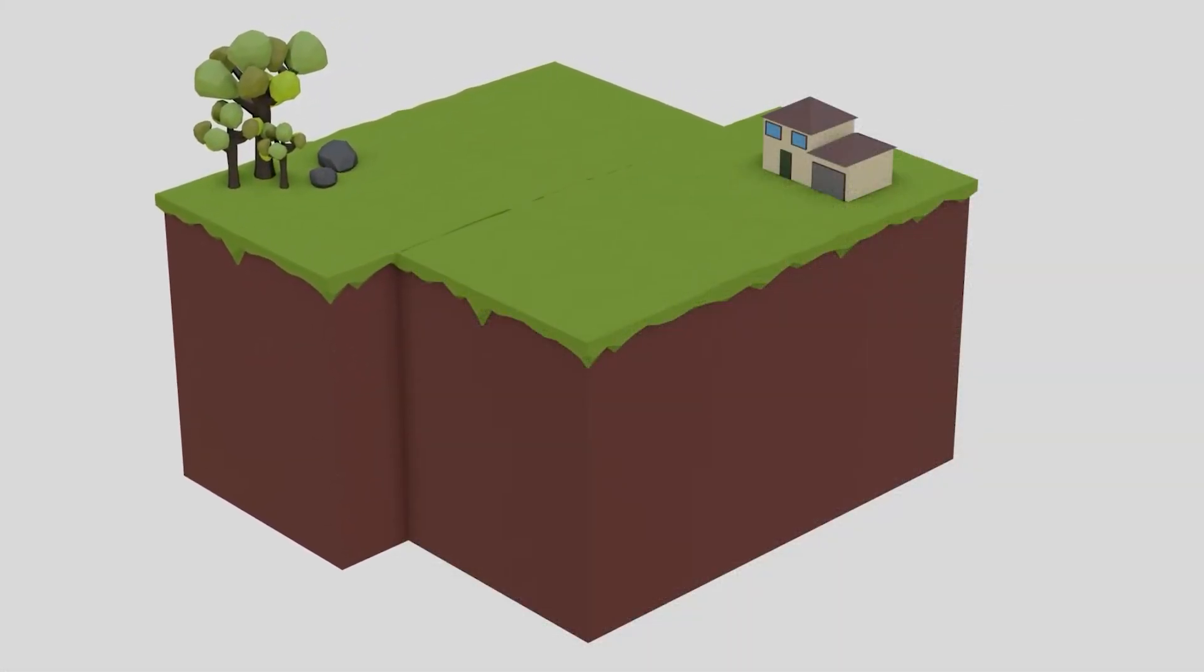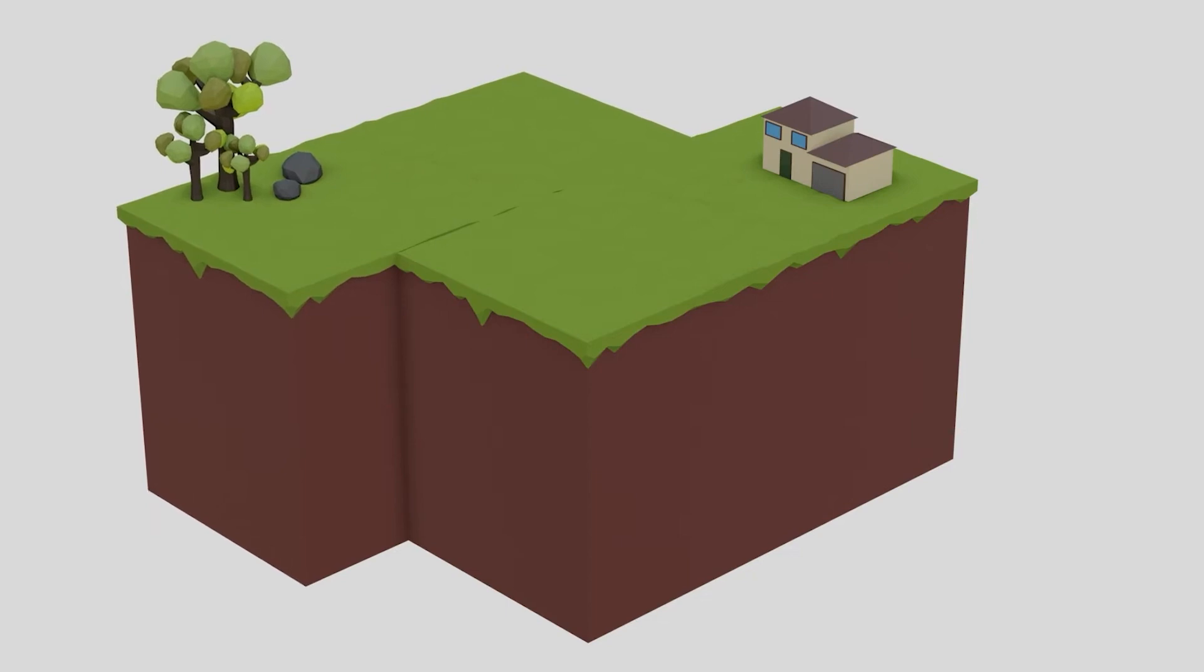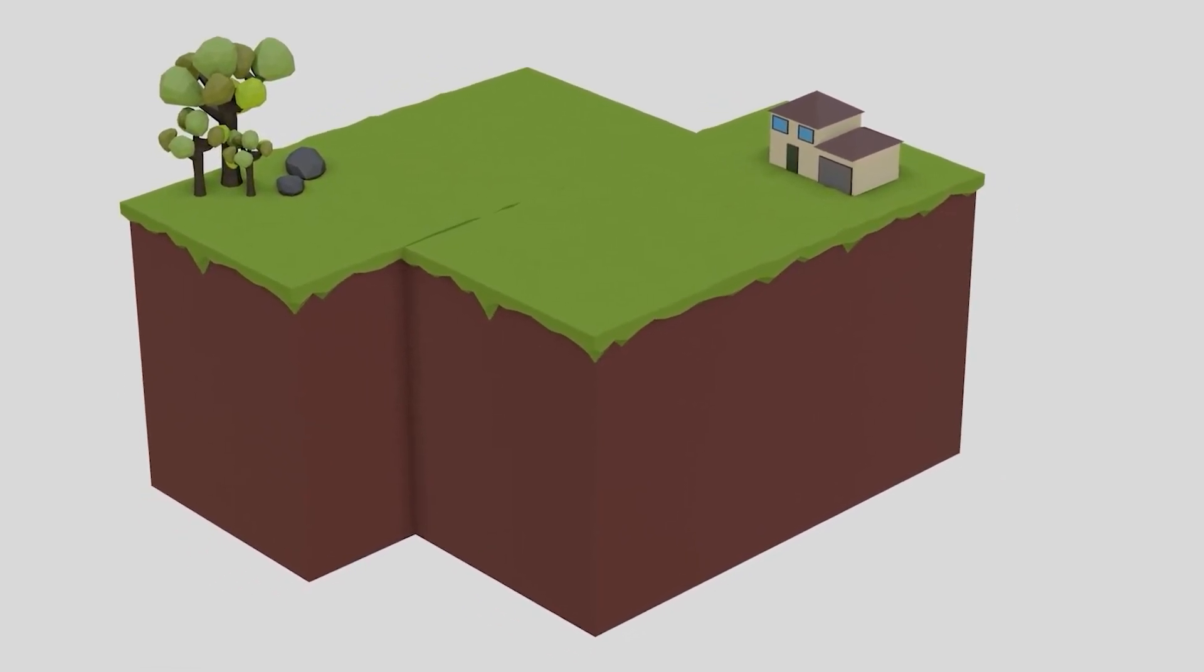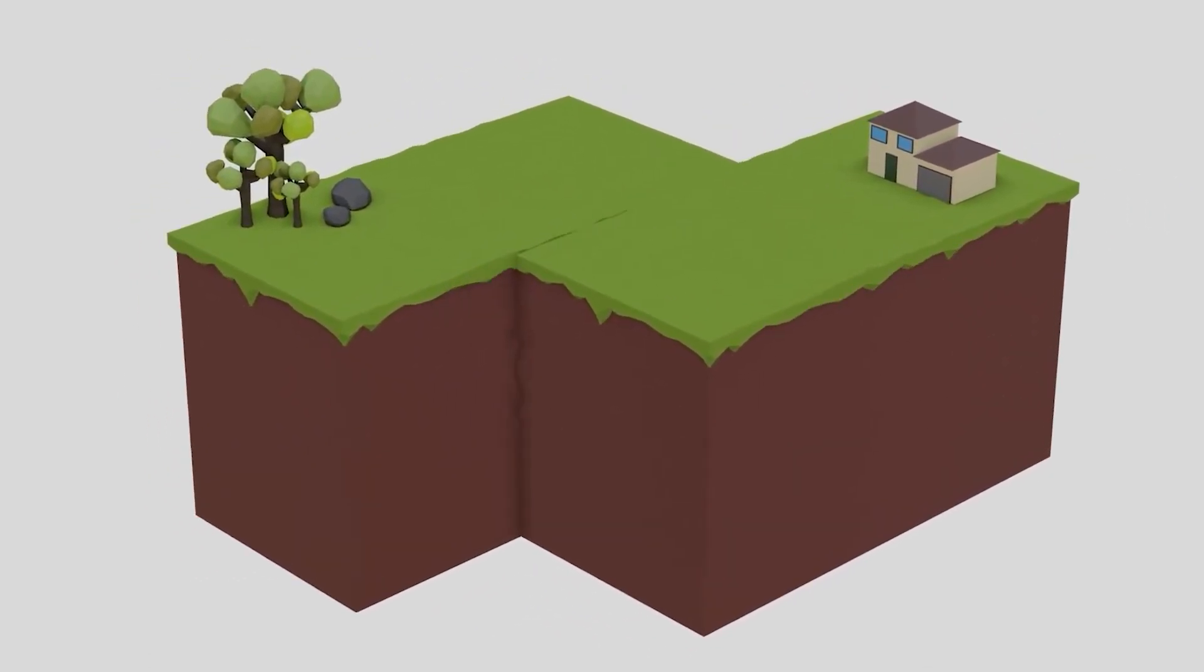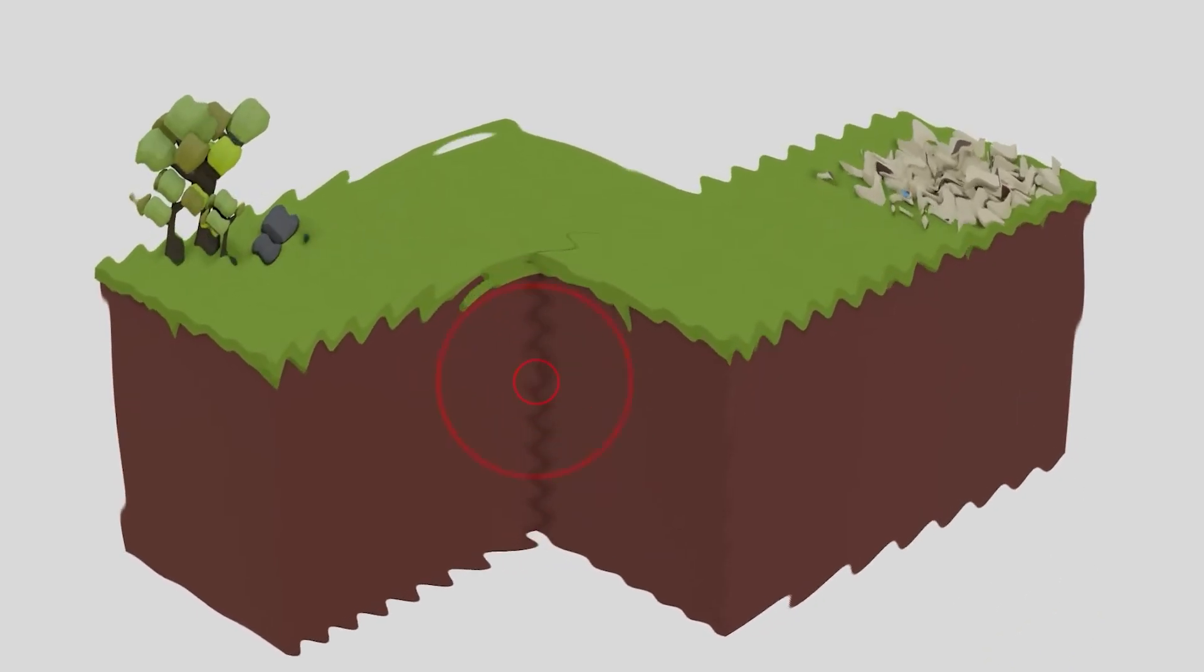Most of the time, these shifts are minor and go unnoticed, but every now and then, a larger slip occurs, releasing a massive amount of energy, which can cause significant earthquakes.